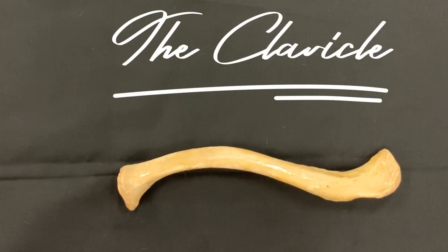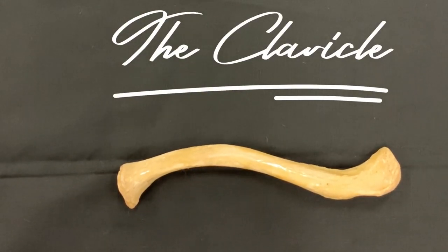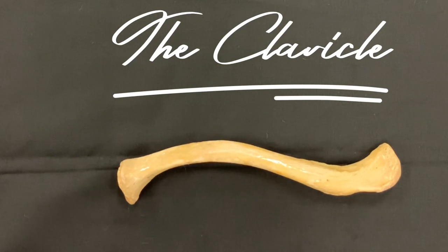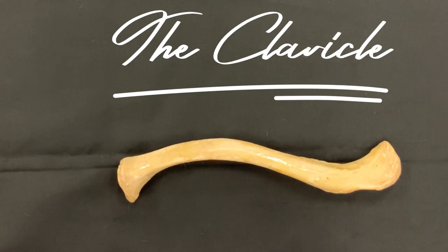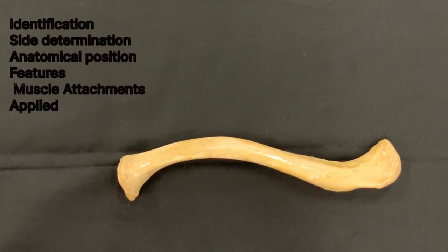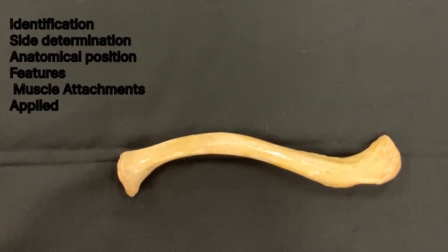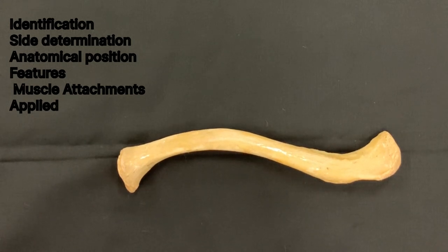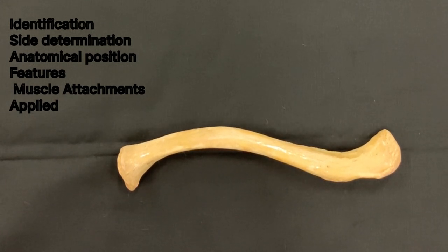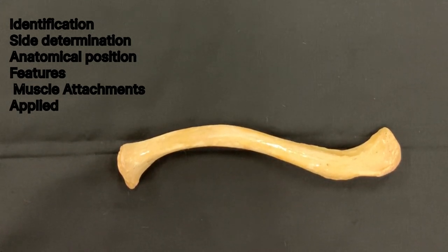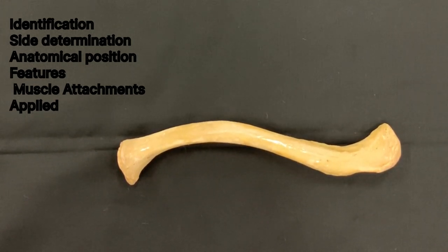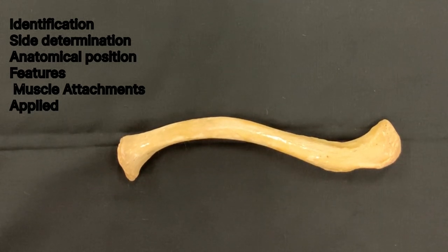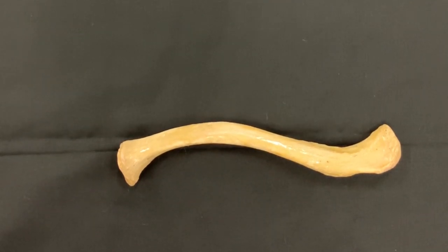This video is a demonstration of the clavicle bone. After the demonstration, the student should be able to identify the given bone, its side determination, important features, keep it in anatomical position, and describe the different types of joint formed by the given bone and its muscle attachments.